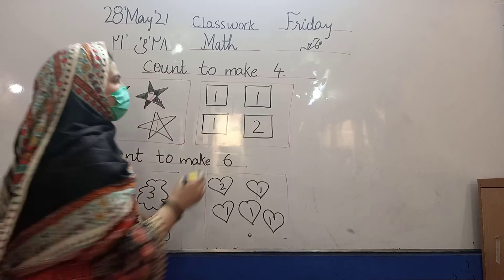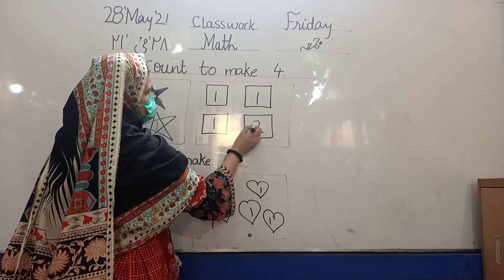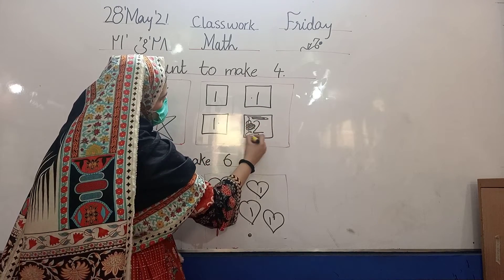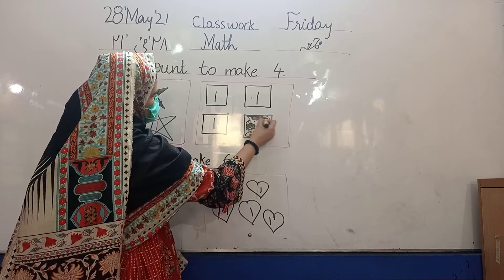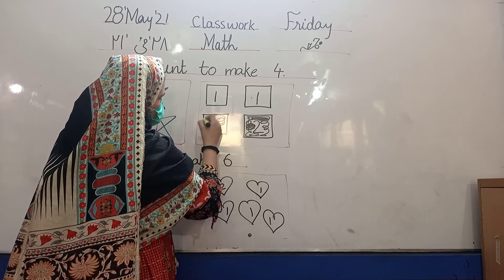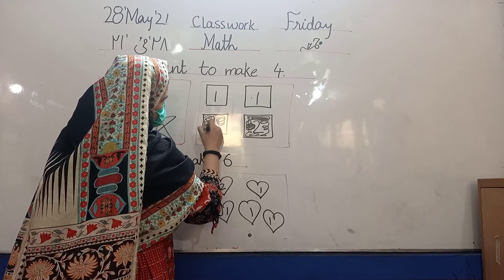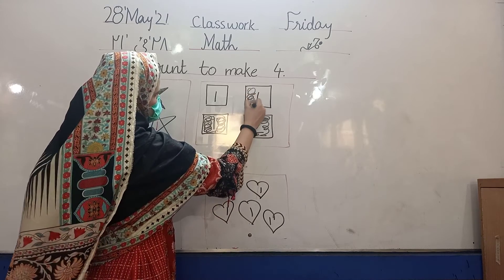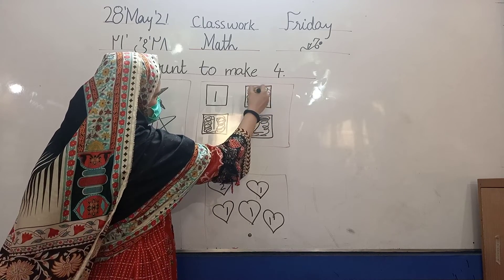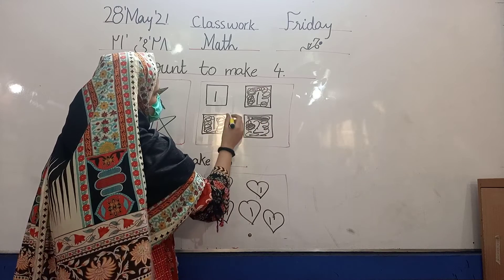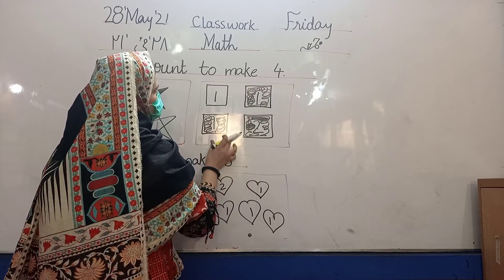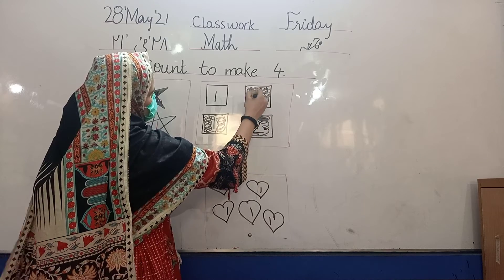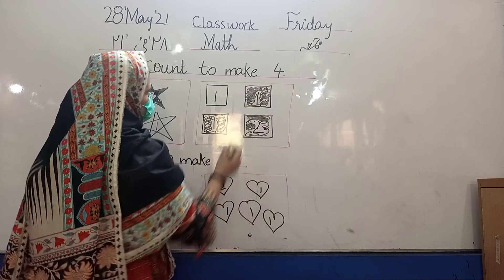Count to make 4: 1, 2, 3, 4. Color this one box. 2 plus 1 plus 1 is equal to 4. The answer is 4. 2 plus 1 is equal to 3, plus 1 is equal to 1. The answer is 4.